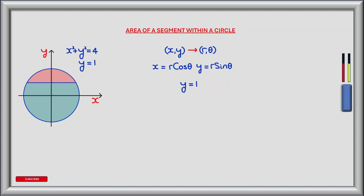For the horizontal line where y equals 1, making the substitution for y gives r sin theta equals 1, and therefore r equals 1 divided by sin theta.